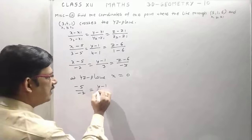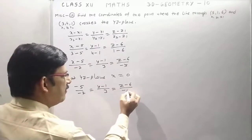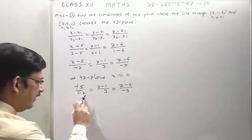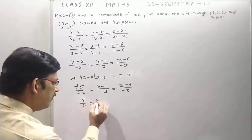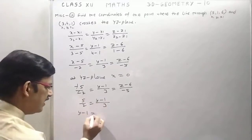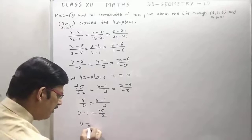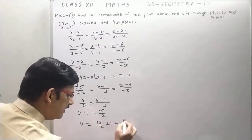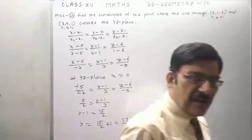We take the first and second parts: 5 by 2 equals (y minus 1) upon 3, so y minus 1 is equal to 15 by 2, and y is equal to 15 by 2 plus 1, that is 17 by 2. So this is the value of y.